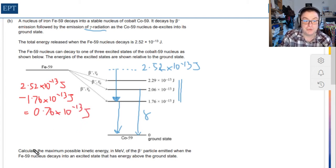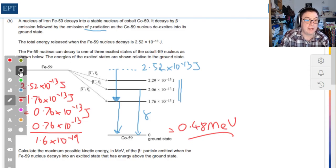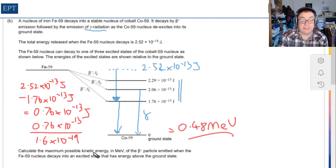Now it's just a question of converting this energy in joules into MeV. You could take 0.76 times 10 to the minus 13 and divide it by 1.6 times 10 to the minus 19. If you do that, you will get the answer of 0.48 MeV. You might find yourself dividing by 1.6 times 10 to the minus 13 instead, in which case the answer will come out in mega electron volts directly.